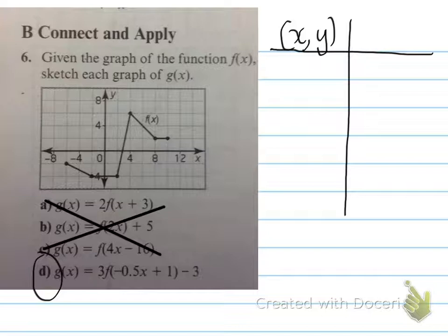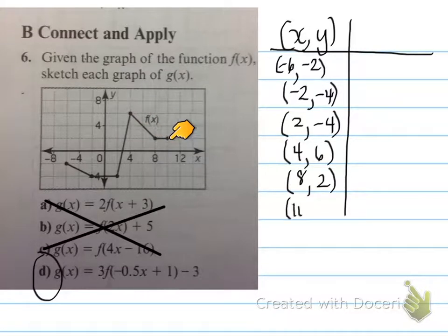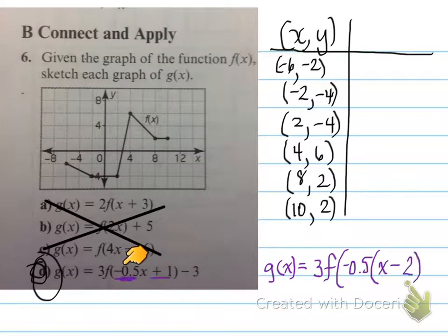So, x and y, and what transformations are we going to have? Well, we need to make sure x has a coefficient of 1 first. So, take the original basic coordinates that are these coordinates. Negative 6, negative 2, negative 2, negative 4, 2, negative 4, 4, 6, 8, 2, and 10, 2. All of these coordinates, we're now going to transform. How are we going to transform them? We'll make x have a coefficient of 1. g(x) equals 3 times f(negative 0.5 times (x minus 2)). Don't forget, we're dividing this by negative 0.5, and then outside will be negative 3.